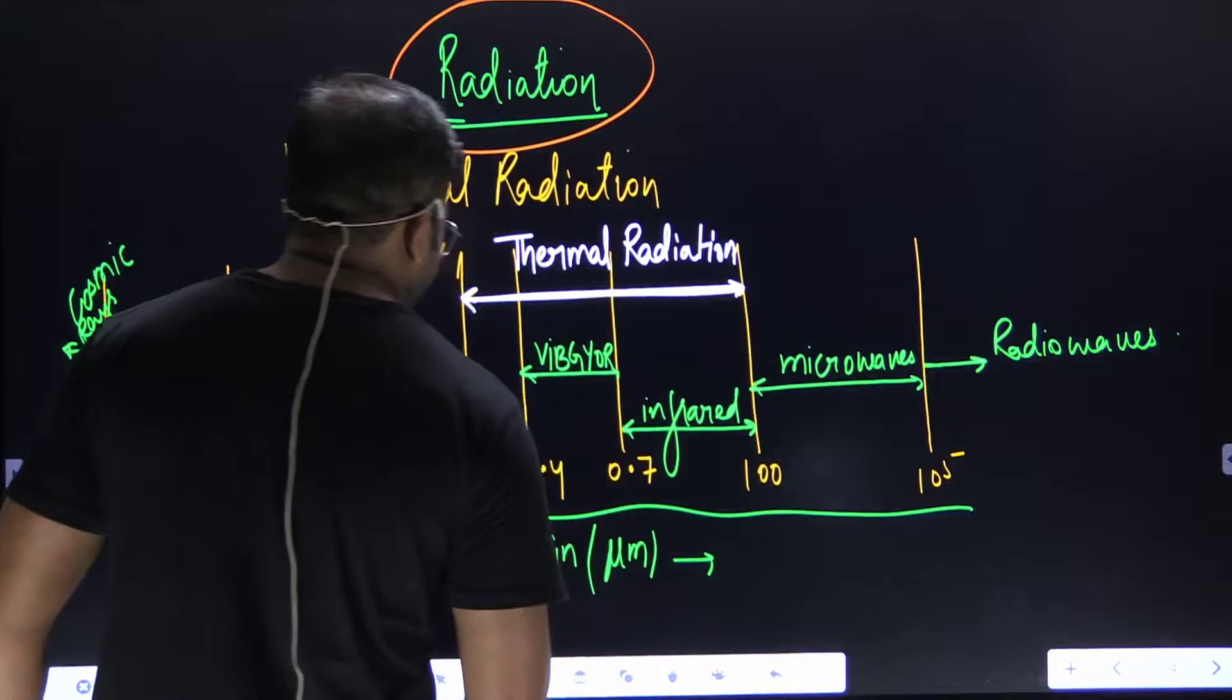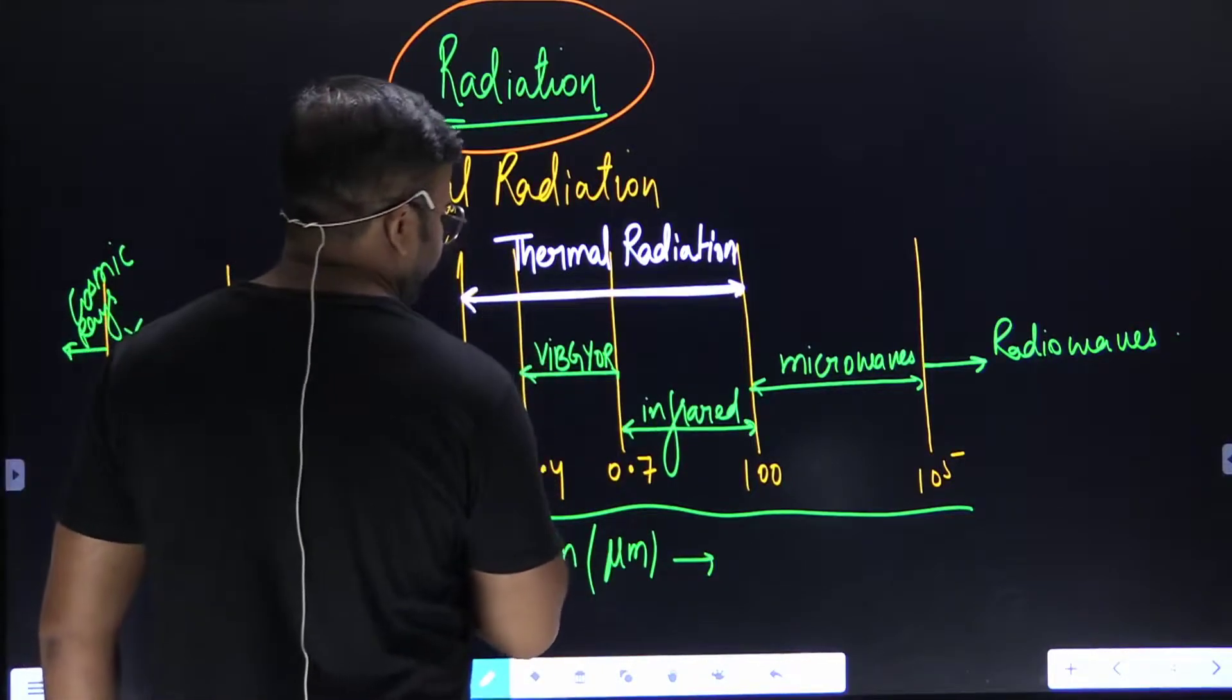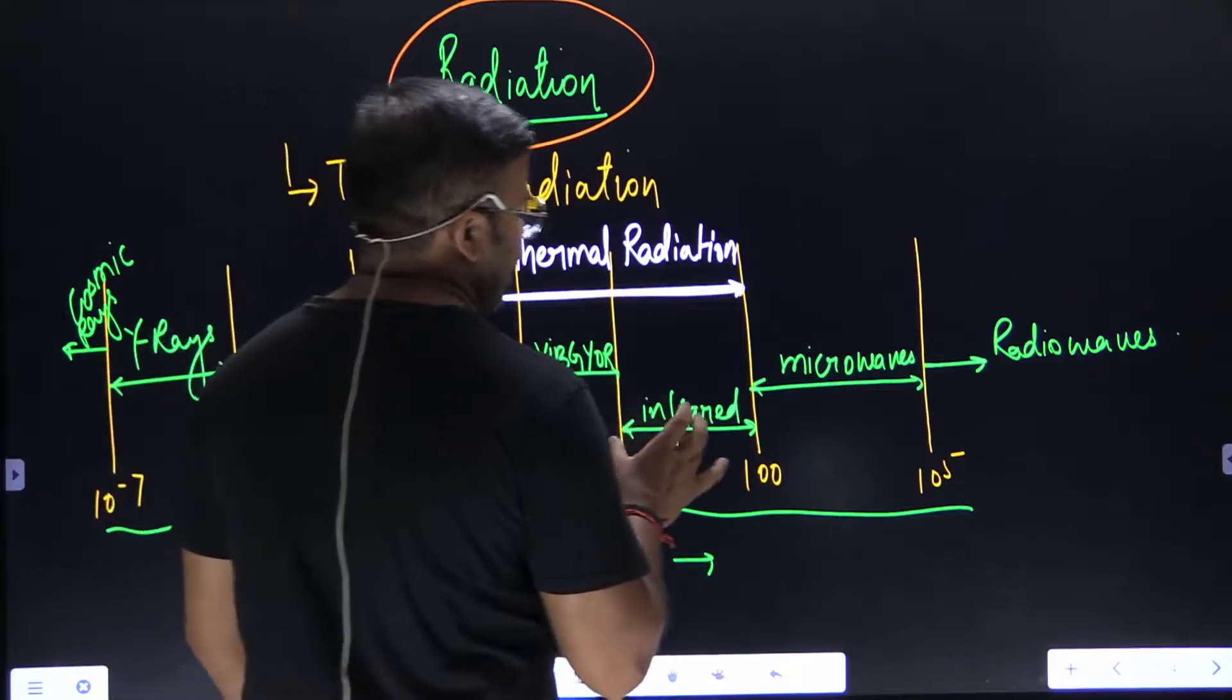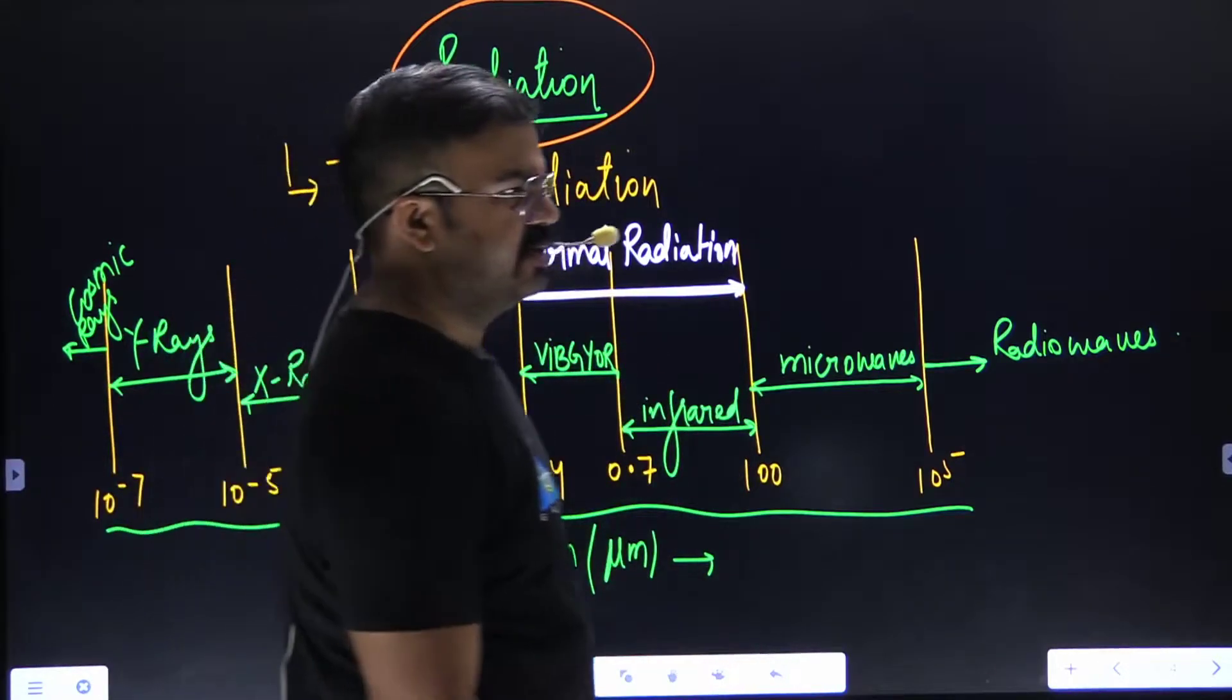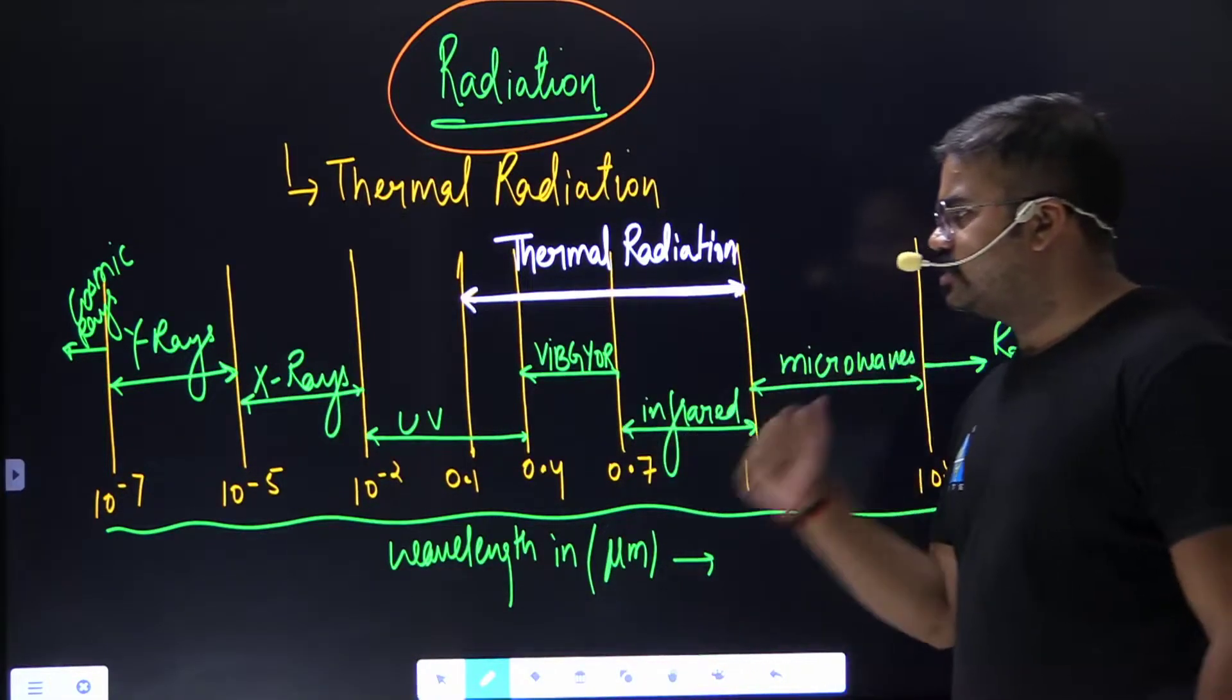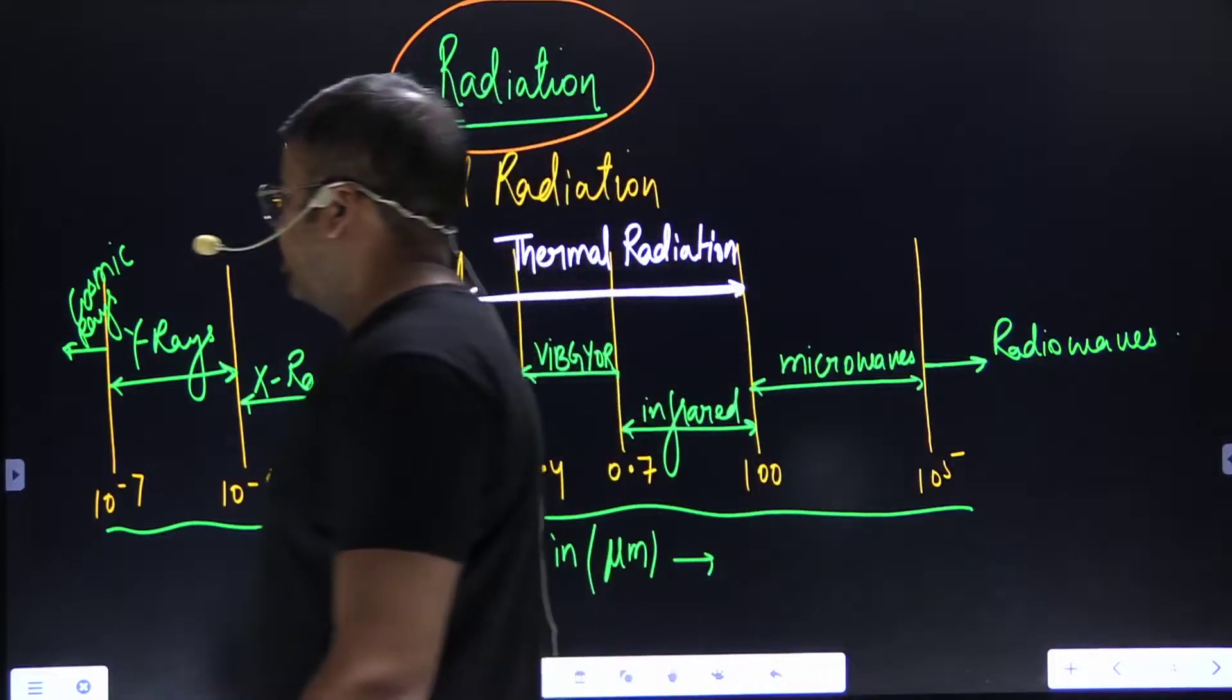Now if we talk about thermal radiation, what does it contain? It contains a fragment of UV, the entire spectrum of VIBGYOR, and the entire spectrum of infrared. This we know, yes or no?